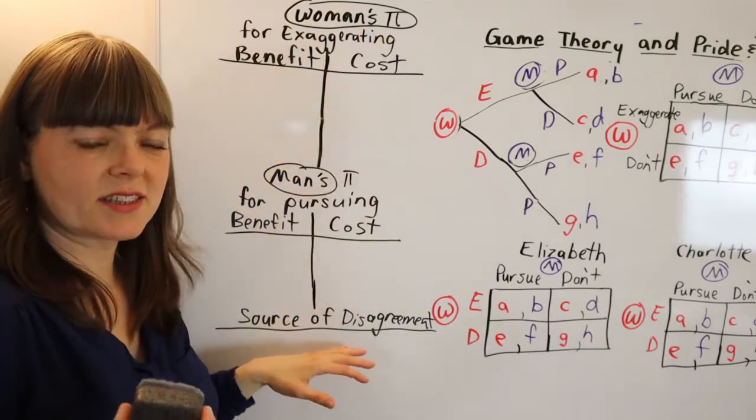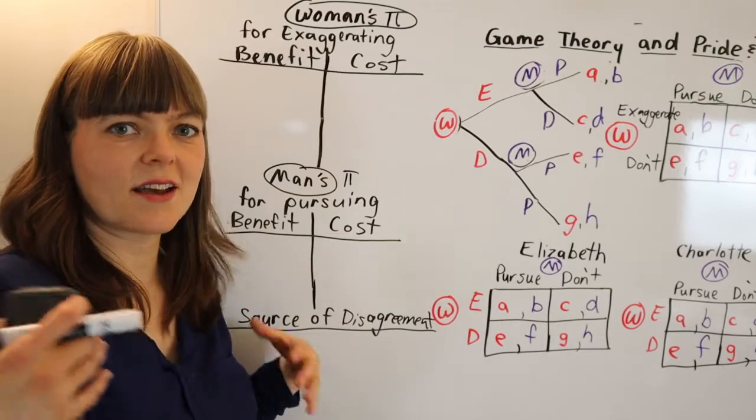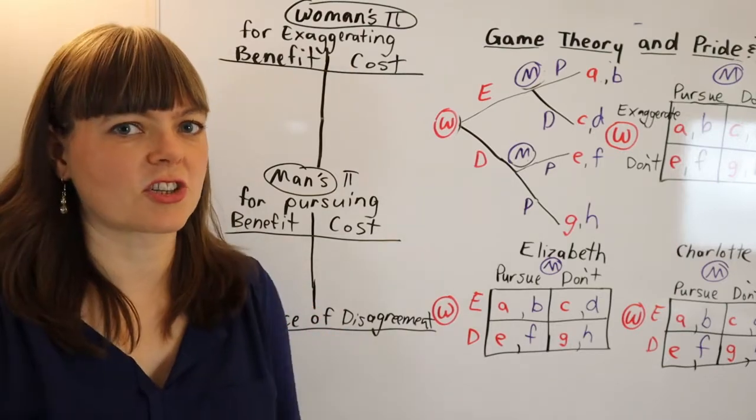In any case, you want to set up the benefit and cost table from both players perspectives. And I would like to come up with a list down here of the sources of disagreement between Elizabeth and Charlotte.